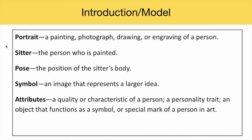Introduce students to this vocabulary. Portrait: a painting, photograph, drawing, or engraving of a person. Sitter: the person who is painted. Pose: the position of the sitter's body. Symbol: an image that represents a larger idea. Attributes: a quality or characteristic of a person, a personality trait, an object that functions as a symbol, or a special mark of a person in art.